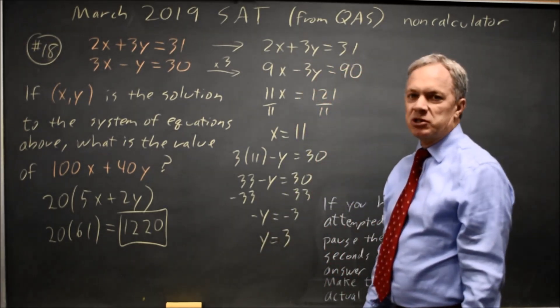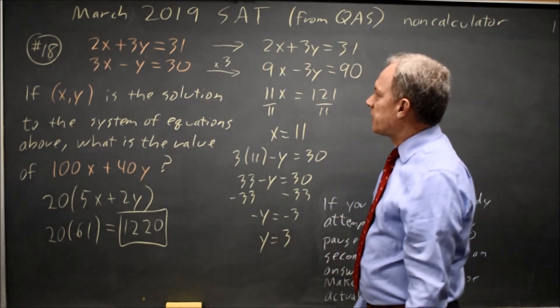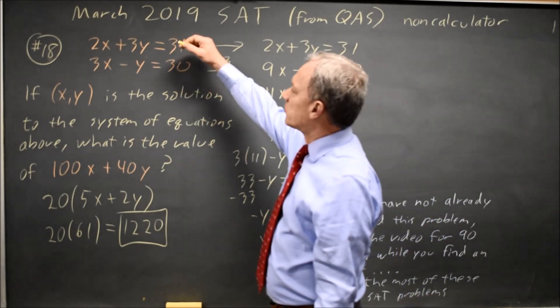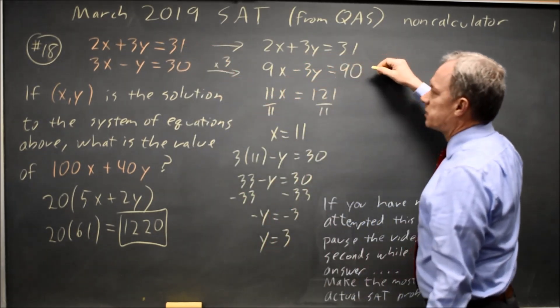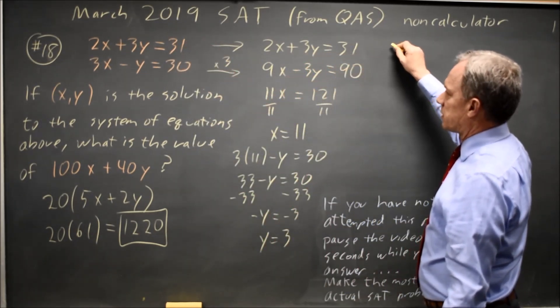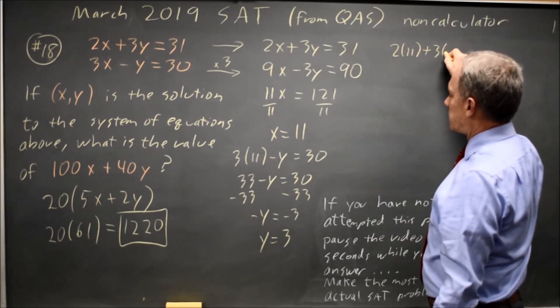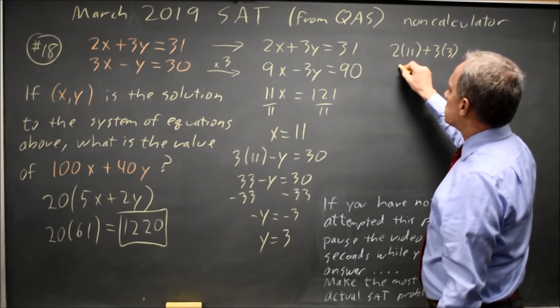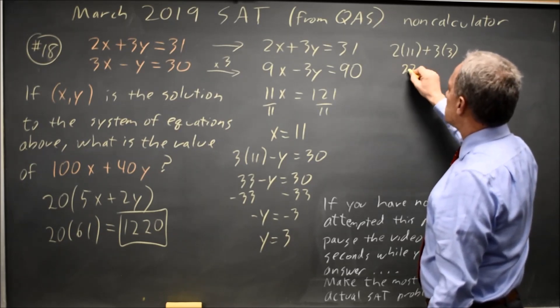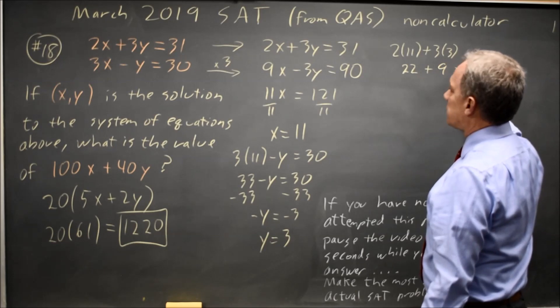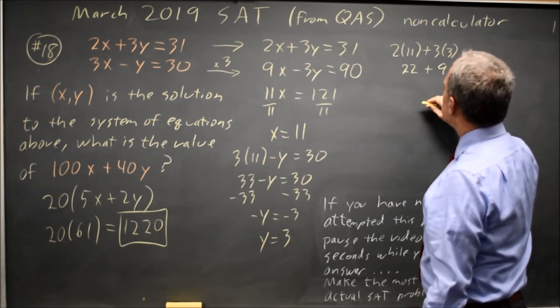With systems, I'll almost always substitute my answer into the equation I did not already use to make sure it works there also to check for careless errors. So twice X is twice 11 plus 3 times Y is 3 times 3. That is 2 times 11 is 22 plus 9 and that is 31. So it checks.